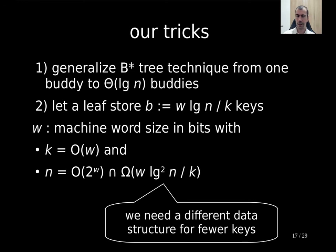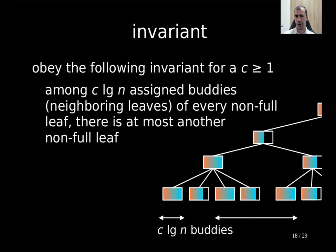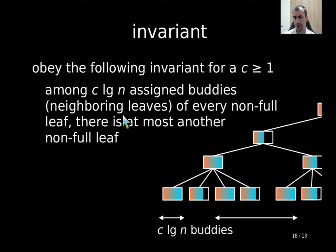The key invariant of our data structure is: for a given constant C ≥ 1, among C·log N assigned bodies neighboring the leaves of every non-full leaf, there is at most one other non-full leaf. In the example shown, we focus on one node and assign it C·log N bodies — in this picture, four bodies. Note that neighboring doesn't necessarily mean a sibling leaf; it could be further apart but still in the successive vicinity.